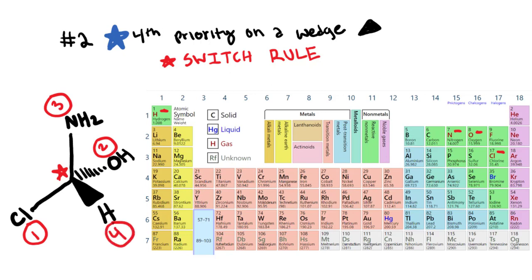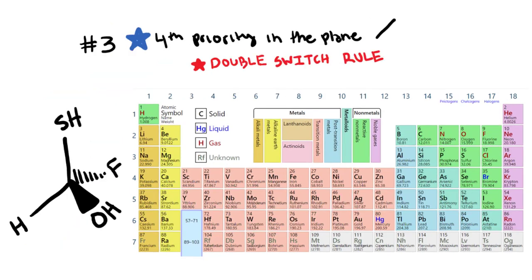Now we check if it's moving clockwise or counterclockwise using the switch rule: when the fourth priority group is on a wedge, if the molecule looks like it's R, it's actually S, and if it looks like S, it's actually R. Going 1, 2, 3, it looks like we're going counterclockwise, so that looks like S. However, because of the switch rule, we can conclude that this is actually R configuration.